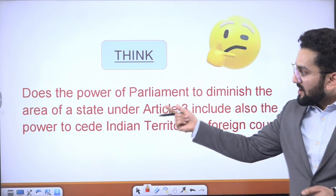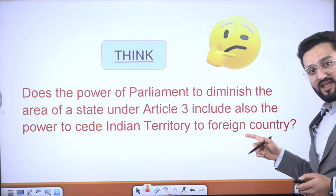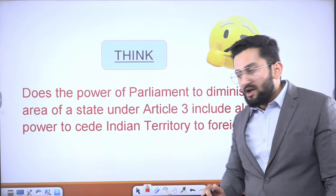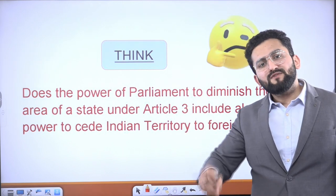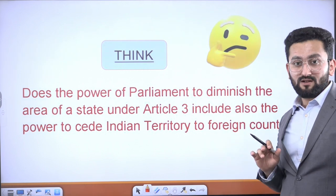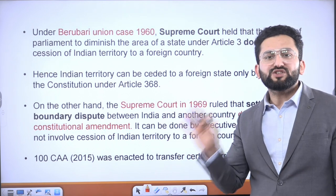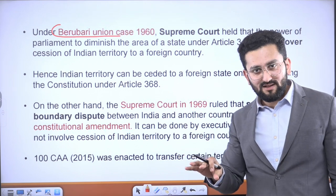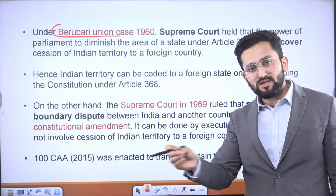Does the power of Parliament to diminish the area of a state under Article 3 also include the power to secede Indian territory to a foreign country? No, this cannot happen. If Parliament tries to decrease the boundary of a state and give the remaining part to another country, that would require amending the Constitution. There was a case of Beru Bari Union in West Bengal's Jalpaiguri district. When Radcliffe was given responsibility for dividing territory between India and Pakistan, there were some lapses and gaps in the boundary demarcation. Pakistan claimed the Beru Bari area since it was not mentioned in the official documents.